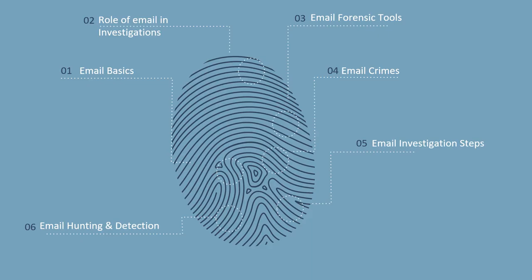To summarize, we looked at email basics as the first topic, then the roles of emails in investigations, email forensic tools, some email crimes and how they can be conducted, the six steps on how to investigate email crimes, and finally a sheet on how to perform email hunting and detection. Thank you very much.